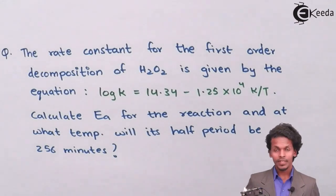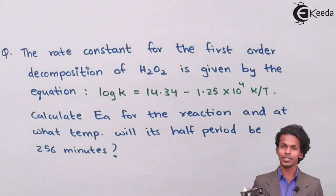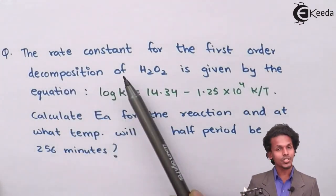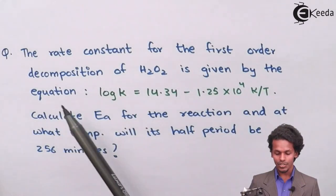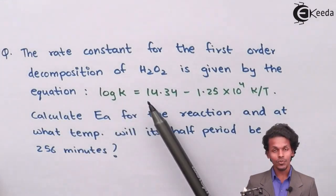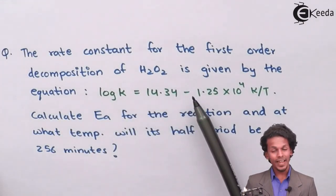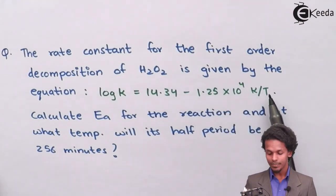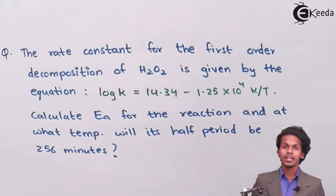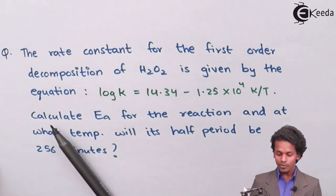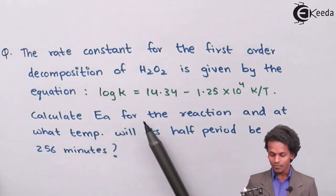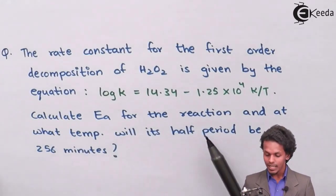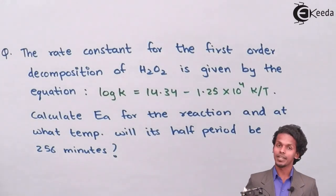As mentioned on your screen, there is a question which is based on the Arrhenius equation, which says that the rate constant for the first order decomposition of hydrogen peroxide is given by the equation: log K = 14.34 minus 1.25 × 10⁴ Kelvin divided by temperature.